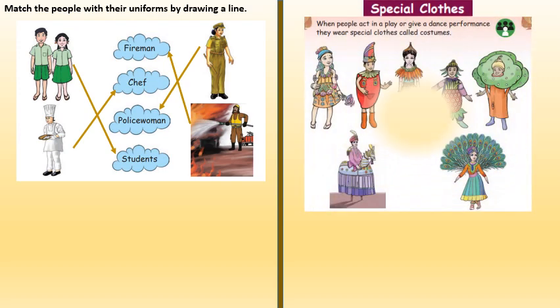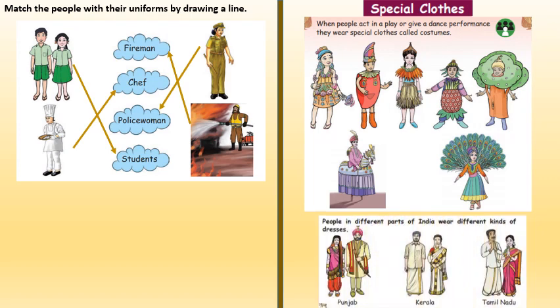Now we are going to talk about special clothes. When people act in a play or give a dance performance, they wear special clothes called costumes. In India, there are many different states and people in different parts of India wear different kinds of dresses. For example, Punjab, Kerala and Tamil Nadu all have different kinds of clothes.